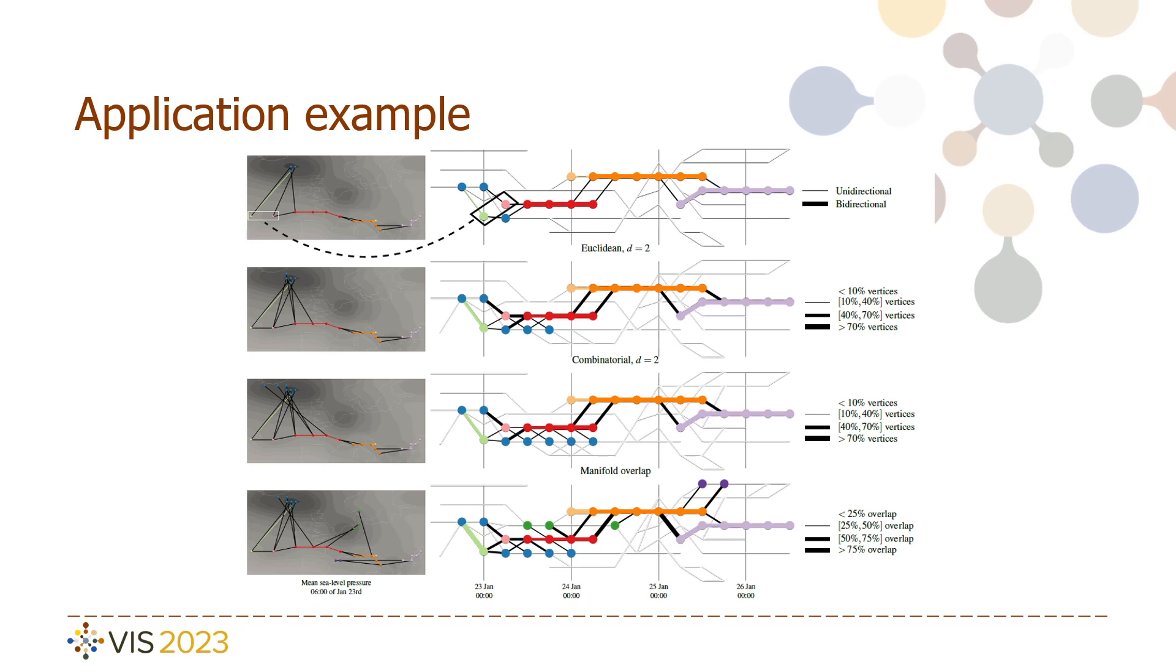Finally, an example of what our strategies can do. We track an extra-tropical storm across Europe using pressure minima, and as you can see, a previous method cannot capture a connection—see the circled area in the tracking graph.